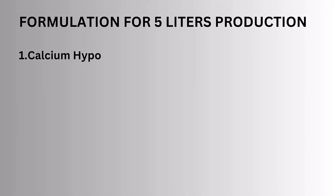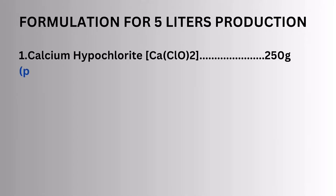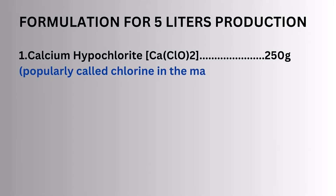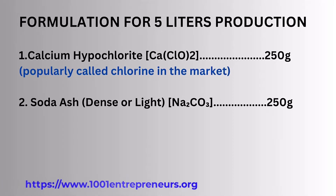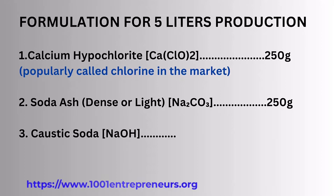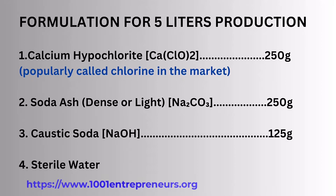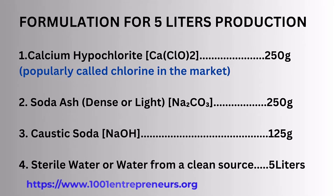Formulation for 5 liters production of household bleach: calcium hypochlorite, also known as chlorine in the market, 250 grams; soda ash, dense or light, 250 grams; caustic soda, 125 grams; sterile water or water from a clean source, 5 liters.